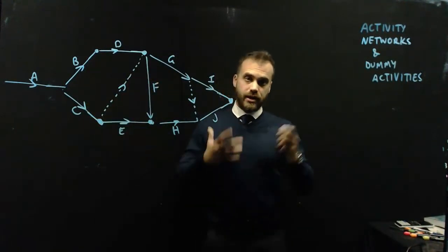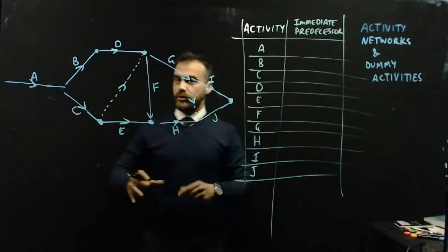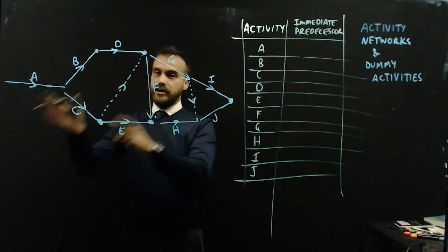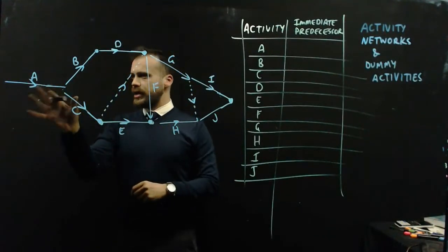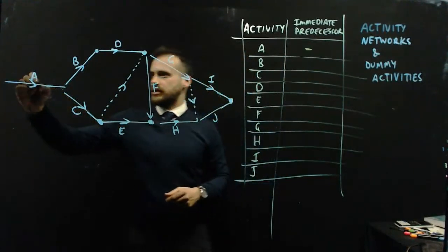So here is a network. And now we're going to create our precedence table. Let's go. We can start from the start, we can start from the end. I don't mind. Let's do a little bit from the start and a little bit from the end. So A is our starting one which means it has no immediate predecessors. Done. I've done A.